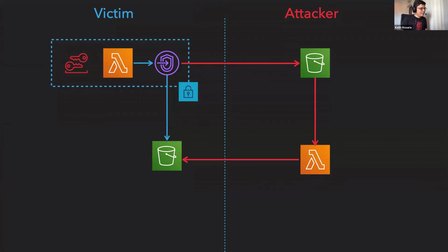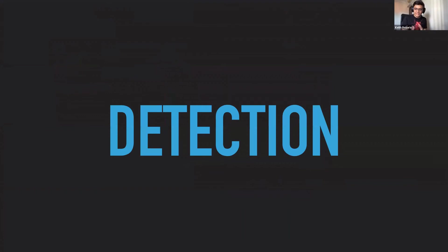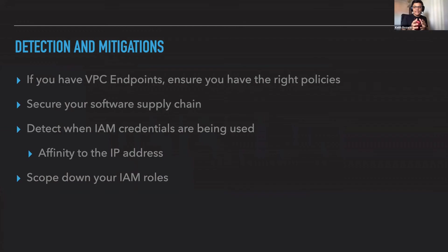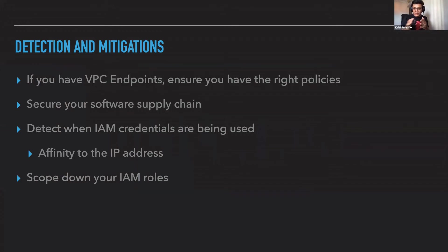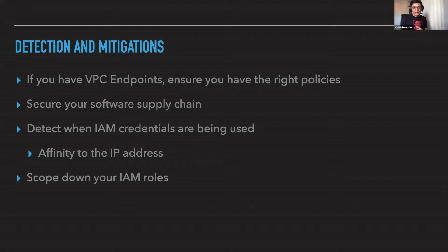Let's talk about detection. How would you detect if someone is using a stolen credential? Within Lambda, there is a tight affinity between the function's IP address and its credential. A credential should always be tied to one and only one IP address. If you see the same key ID being used across multiple IP addresses, someone has exfiltrated those credentials. If deployed in a VPC, you can also watch the source VPC — once a credential is used outside that VPC, you know something is wrong. This works for some API calls, not everything is logged, but you can detect it.